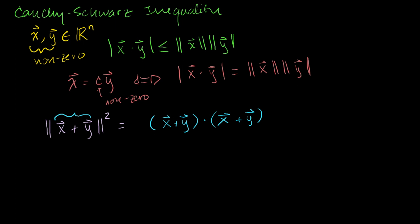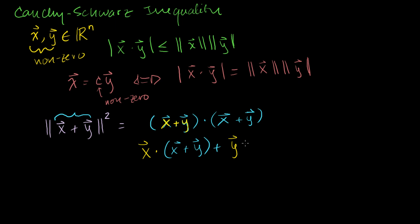This can be rewritten using the distributive property. Let me write x as one term and (x+y) as the other. So this right here can be rewritten as x · (x+y), plus y · (x+y). All I did is distribute one term along each of the terms in the sum.